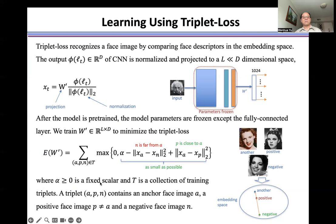Where alpha is a fixed scalar and T is a collection of triplets. A triplet (a, p, n) contains an anchor face image a, a positive face image p, and a negative face image n.